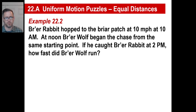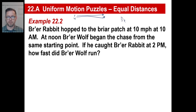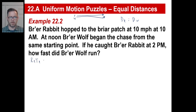Let's try another one. Brer Rabbit hopped to the briar patch at 10 miles an hour at 10 a.m. At noon — that's two hours later — Brer Wolf began the chase from the same starting point. In other words, Brer Rabbit starts and goes to the briar patch; Brer Wolf starts from the same point heading the same place. So their distances are exactly the same — we have an equation already: distance of the rabbit equals distance of the wolf. R sub rabbit times T sub rabbit equals R sub wolf times T sub wolf.